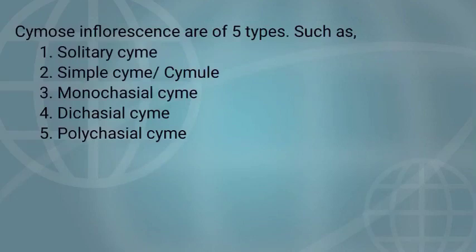The five types of cymose inflorescence are: 1. Solitary cyme, 2. Simple cyme or Cymule, 3. Monochasial or Uniparous cyme, 4. Dichasial or Biparous cyme, 5. Polychasial or Polyparous or Multiparous cyme.